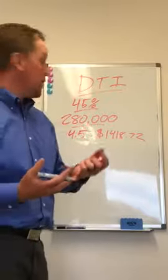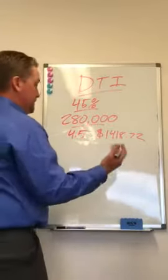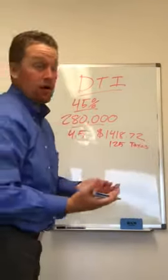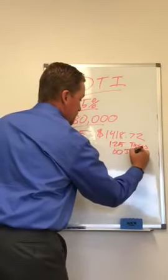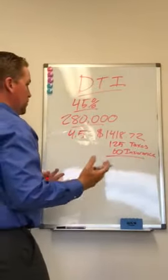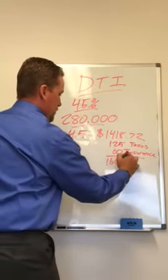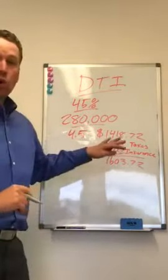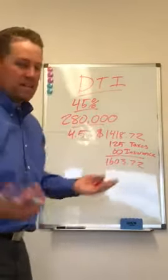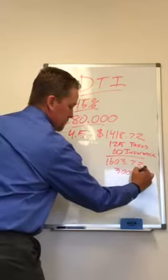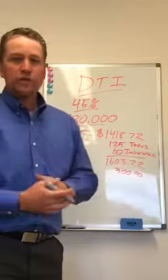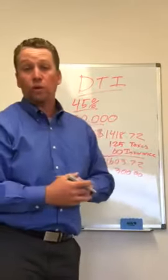Then we would factor in the homeowner's insurance and the taxes. For this analogy, let's say the taxes are $125 a month and the insurance is $60 a month. So the total mortgage payment would be $1,603.72. Then let's throw in a car loan of $300 a month, a couple of Visas, maybe a student loan or two — let's just say it's $200 for every other debt reported on the credit report.